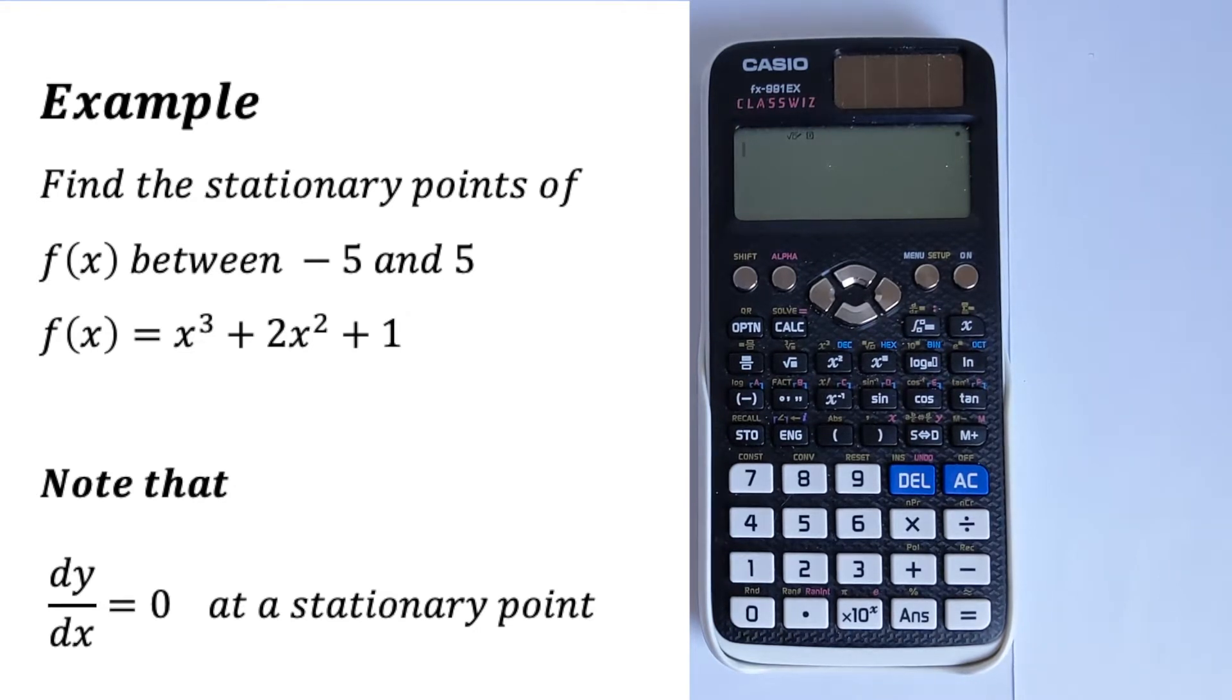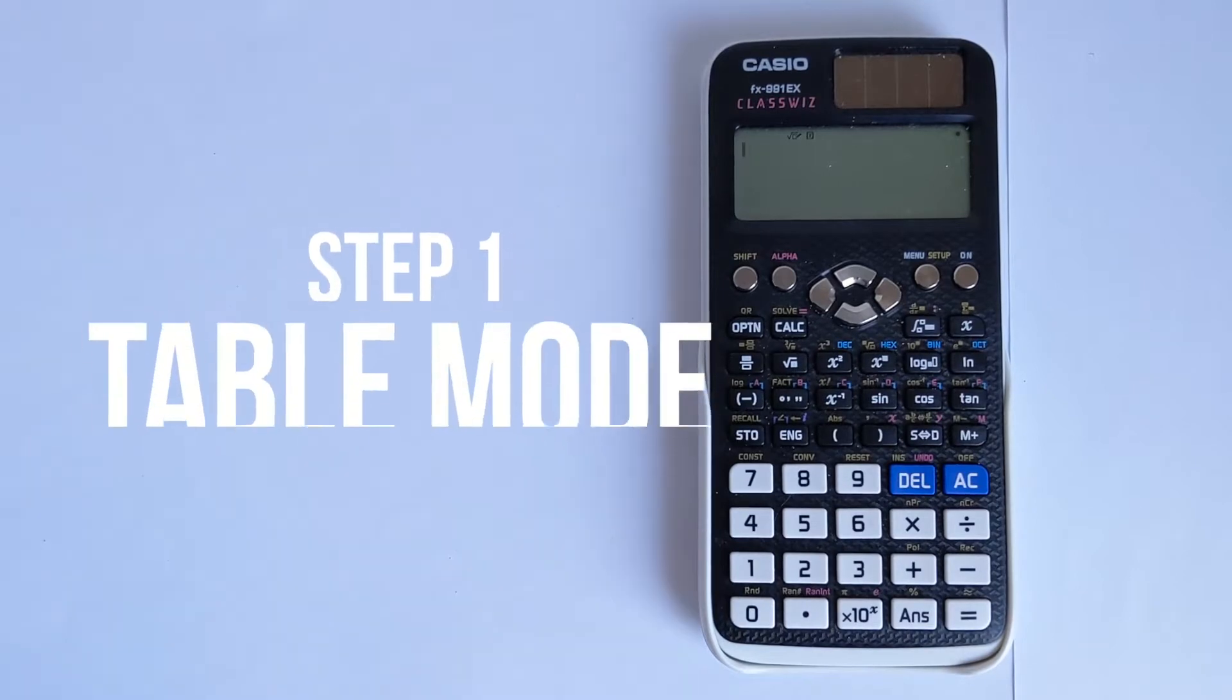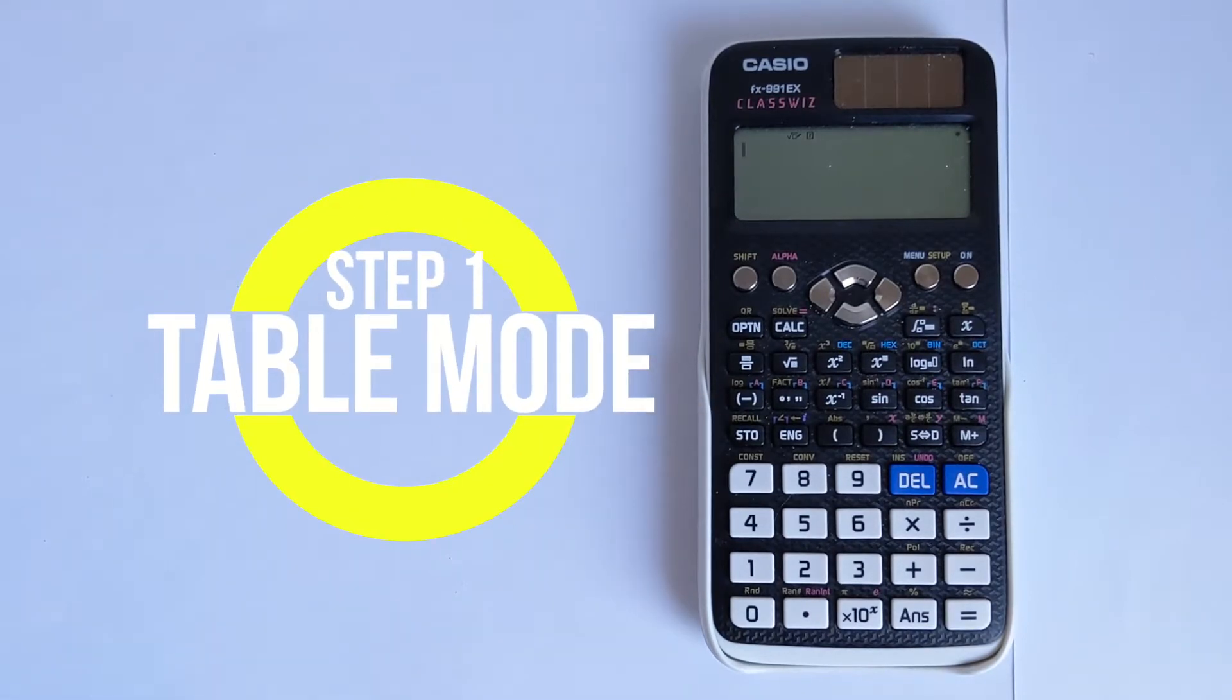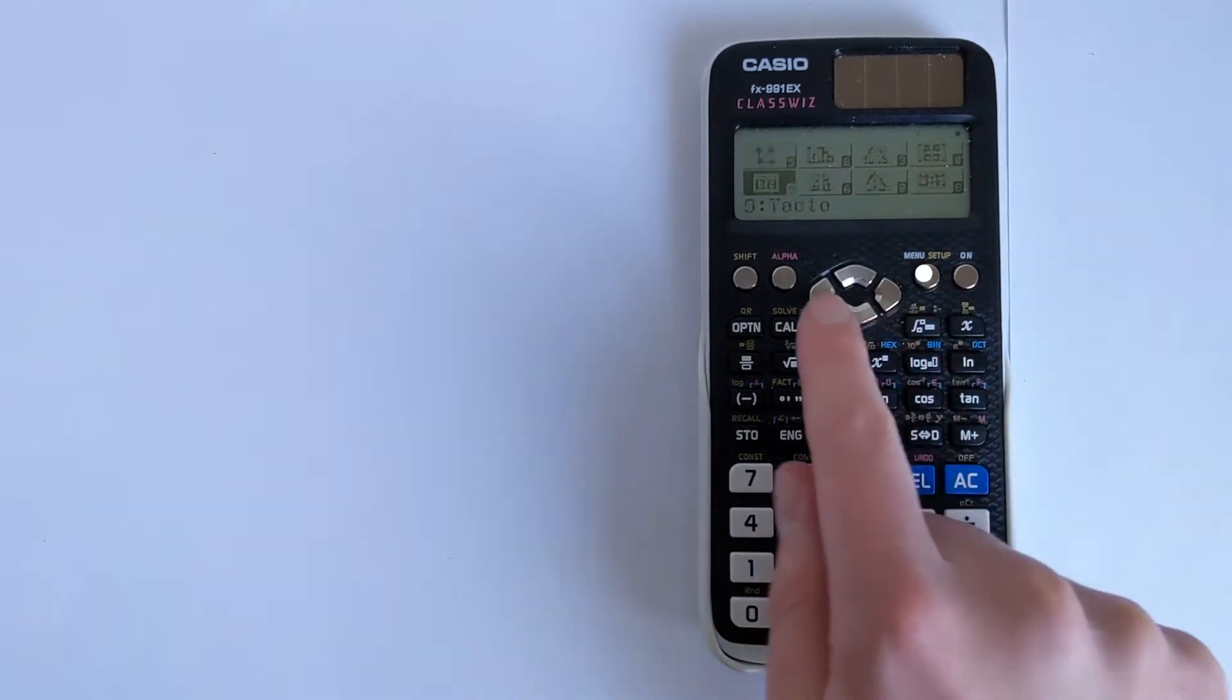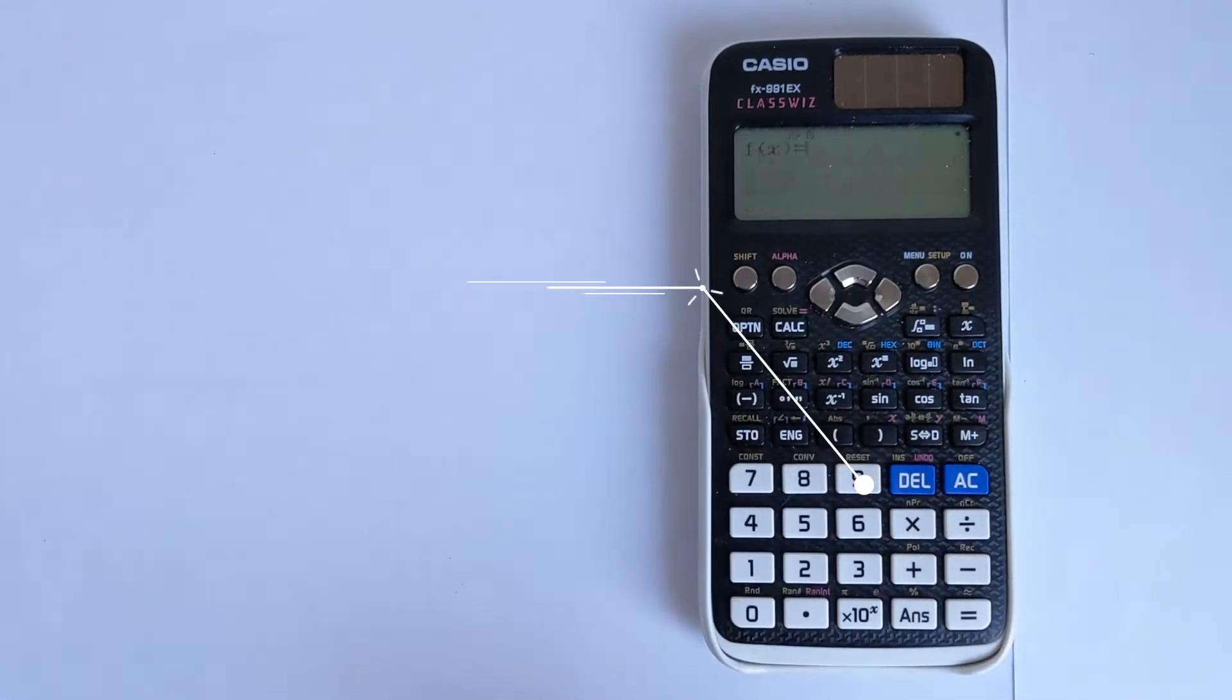And you should know that stationary points occur at the point where dy/dx equals 0. So we're looking out for the derivative being equal to 0. And so the first step to do this on a calculator is to use the table mode. So if we go to menu and then navigate down to option 9, that will give us the table mode.